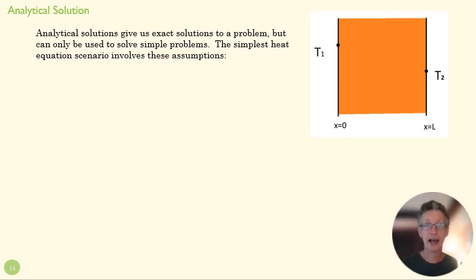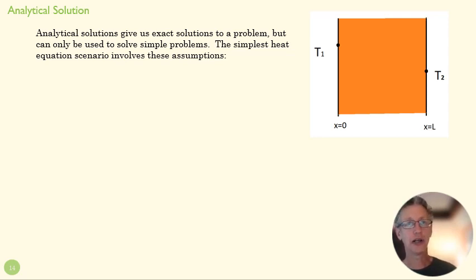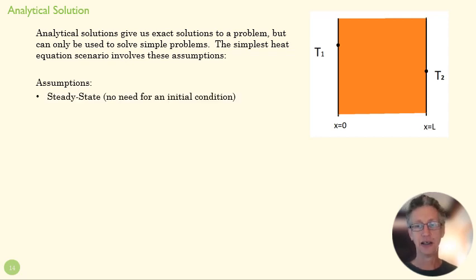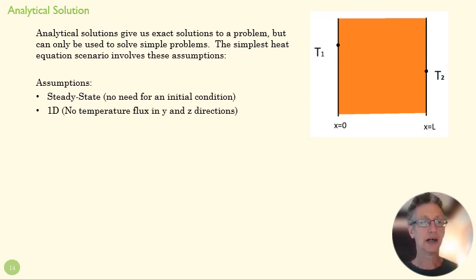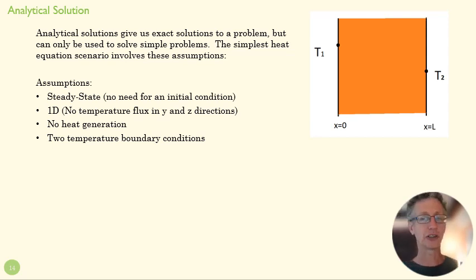Analytical solutions are great because they give us exact solutions to problems, but they're limited because once the geometry starts to get at all complex, they become very difficult to solve with just math. So we're going to solve one to see what it looks like, and then turn to numerical solutions for more complicated ones. We're going to start with the simplest problem: steady state — so we don't even need an initial condition — a 1D temperature field with no flux in the X or Z directions, no heat generation, and two temperature boundary conditions.